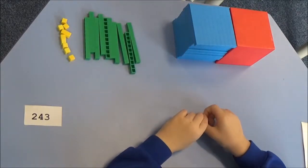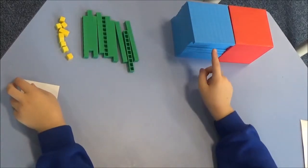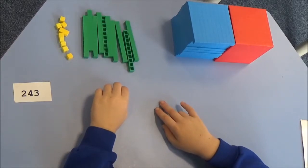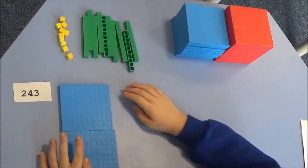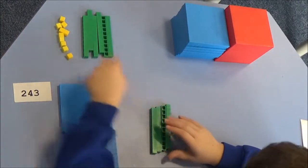Here is a number two hundred and forty-three. It has two hundred, four tens and three ones. We can make it in base ten. There are two hundred, four tens and three ones.